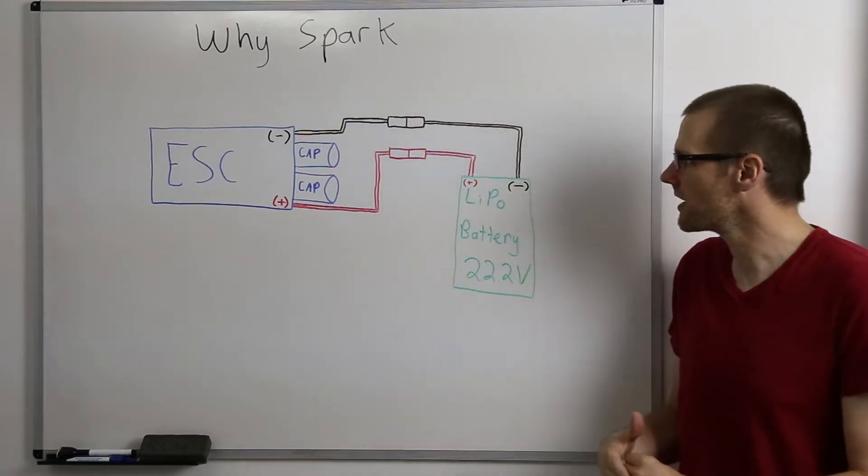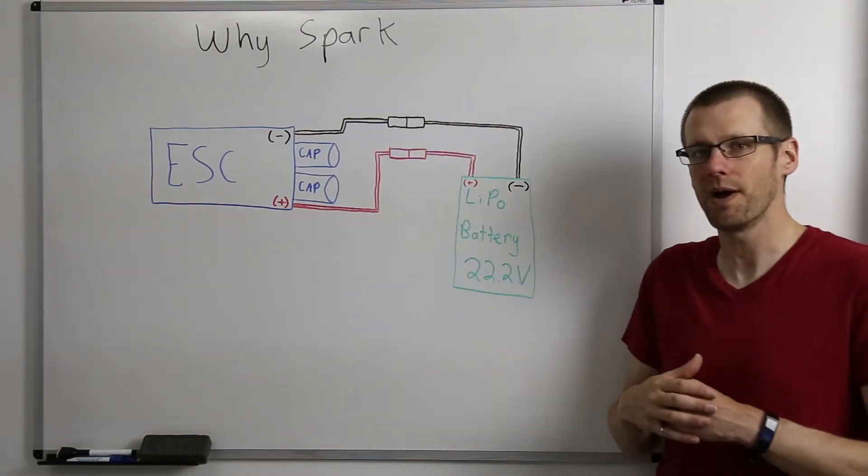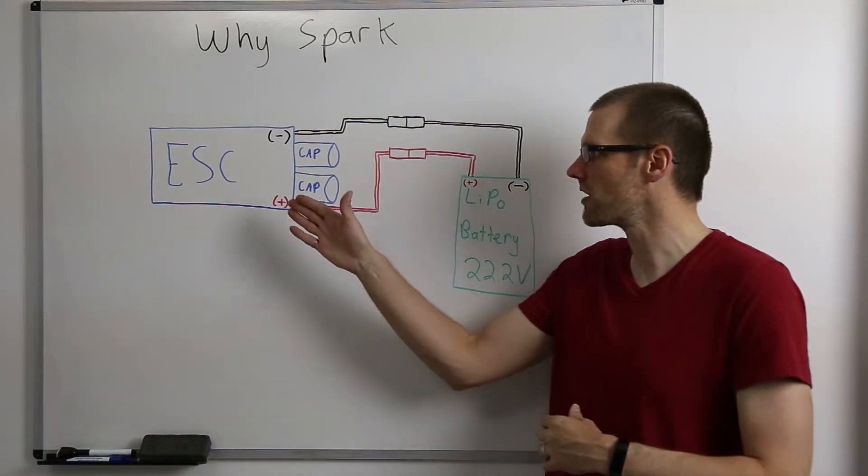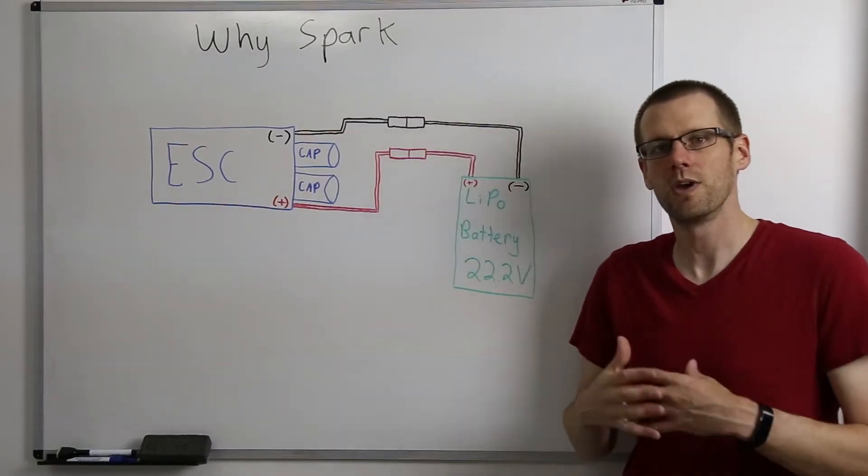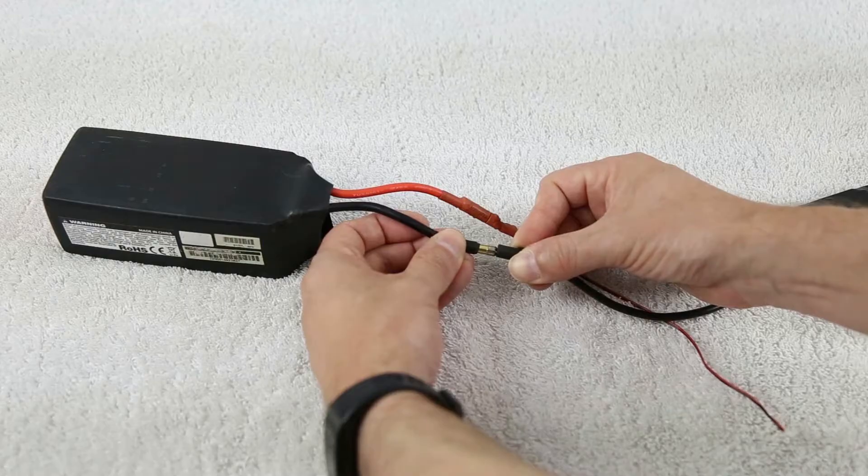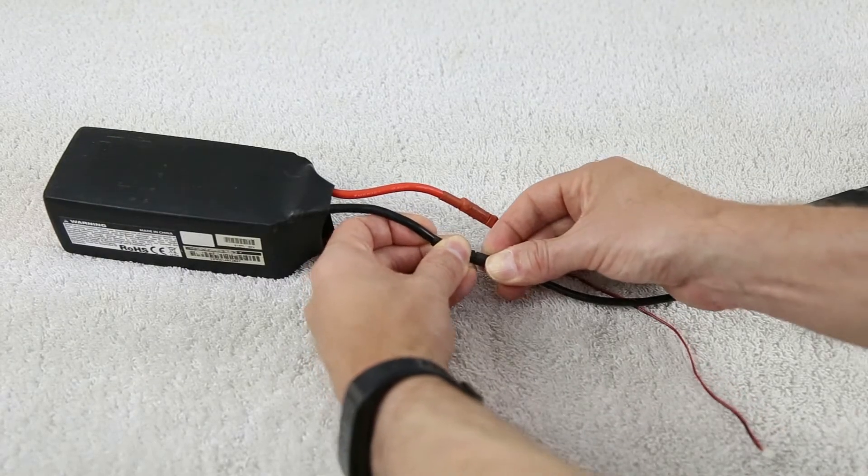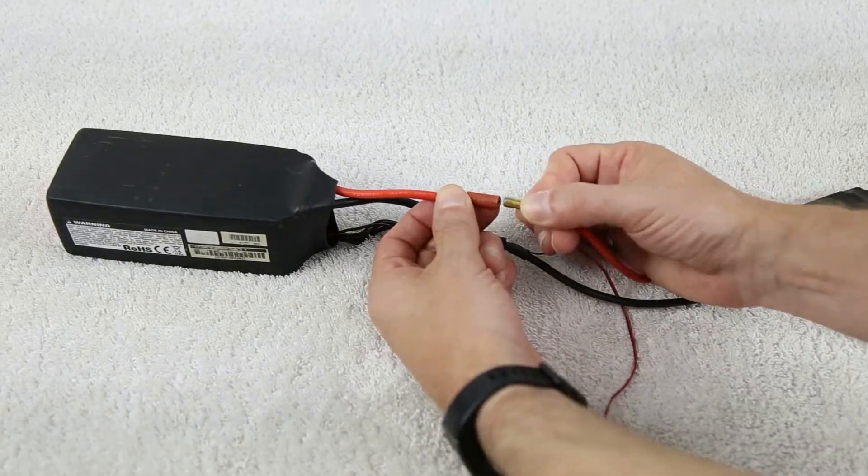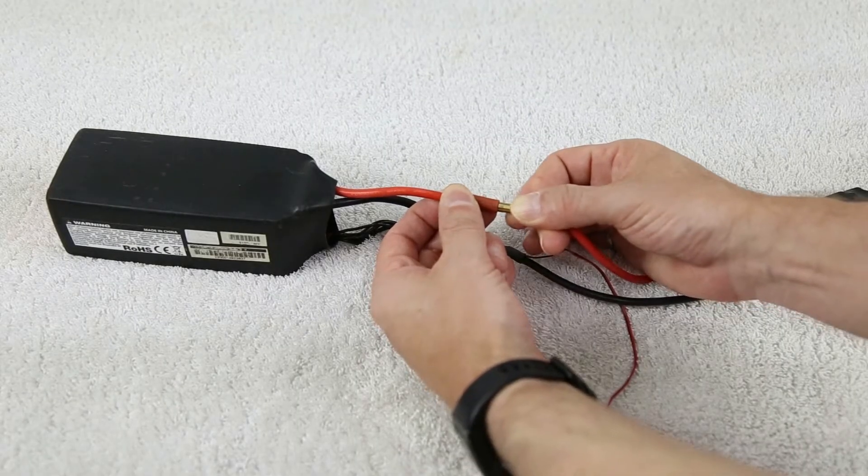In the last video, we ended up taking our 22.2 volt battery pack and plugging it into our electronic speed control. We ended up leaving the last lead being the negative lead for one test, and then we switched that so the last lead that we plugged in was our positive red lead. In both cases, it sparked.